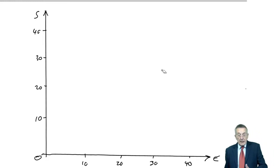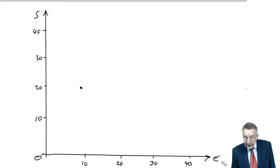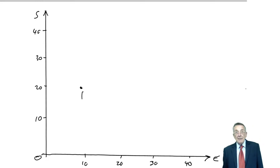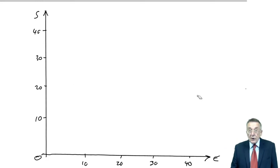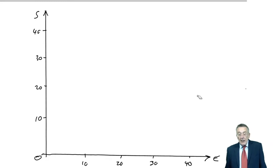You see, any point in that space will represent a certain number of S's, a certain number of E's. That point there, for instance, would represent 20 S's and 10 E's. And the first thing I'm going to do, because we've got those constraints,